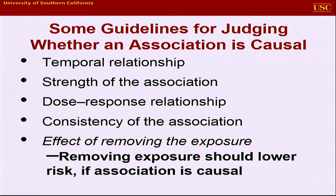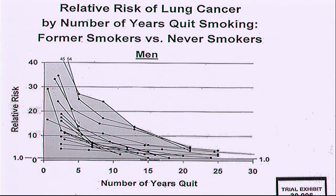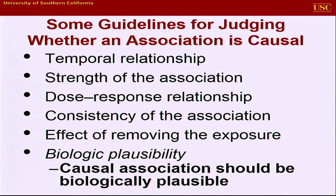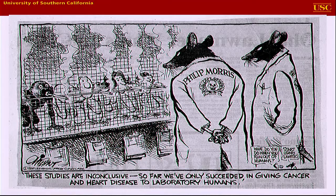Then, included in the 64 report: what happens when the exposure is removed, something that Hill commented on — risks go down. Back to the Minnesota trial, showing a number of studies in terms of what happens to the relative risk of lung cancer in smokers compared to those who do not smoke, and how the risks drop. And then, of course, biological plausibility — that's part of where we are now in thinking about data that describe pathways and lead us to mechanisms.